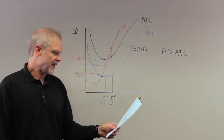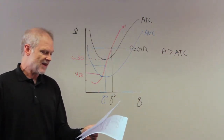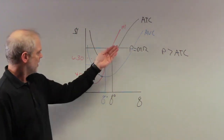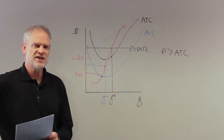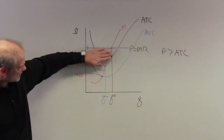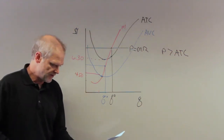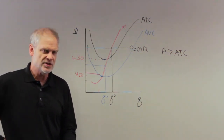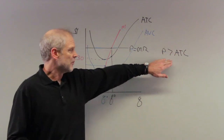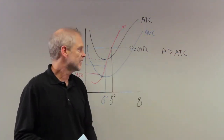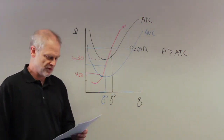Let's read the choices. A: positive economic profits in the short run — clearly correct. B: negative economic profits in the short run but remain in business — no, this firm is not making negative economic profits. C: negative economic profits in the short run — wrong, because negative profits would mean price is below average cost; that's not true here. D: zero economic profits in the short run — no, zero profits occur when price equals average total cost, but price exceeds ATC here. The answer is A: positive economic profits in the short run.